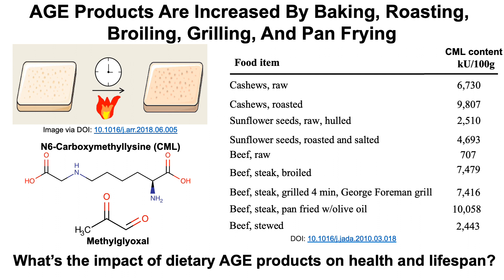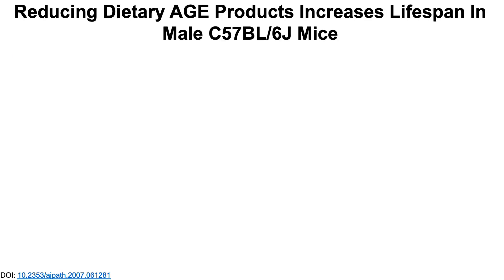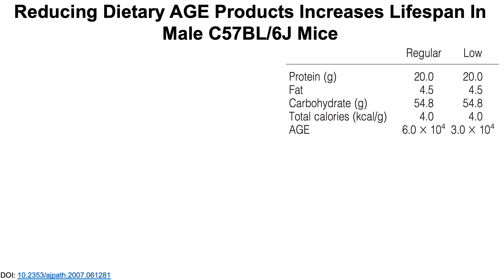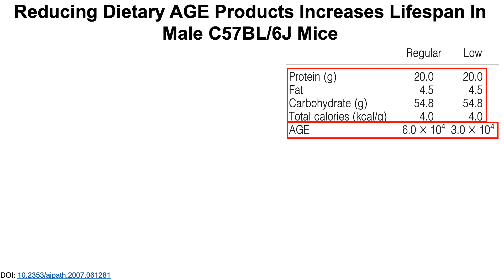Now let's look at why AGE products are important — their impact on health and lifespan. Reducing dietary AGE products increases lifespan in male C57 black 6J mice. There's no data for females; this is the data that exists. They fed mice a regular diet containing normal amounts of AGE products, and then a lower AGE product diet made by heating the animal pellet at a lower temperature. The macronutrient composition of both diets was the same, so any effects seen would not be due to macronutrient differences. However, the AGE product content is half in the low AGE diet.